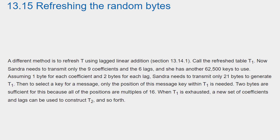To select a key for a message, only the position of the message key within T1 is needed. Two bytes are sufficient for this because all of the positions are multiples of sixteen. When T1 is exhausted, a new set of coefficients and lags can be used to construct T2, and so forth.